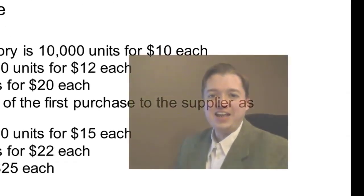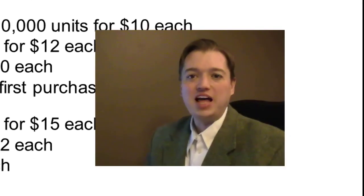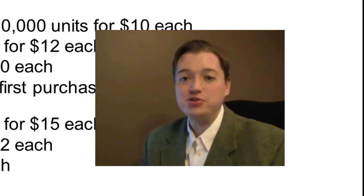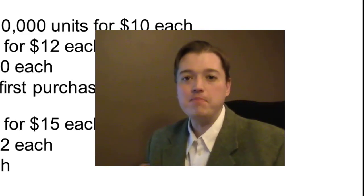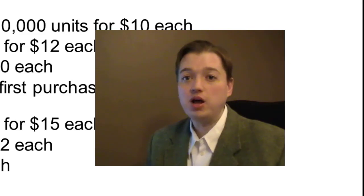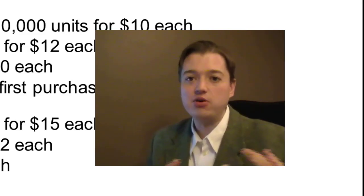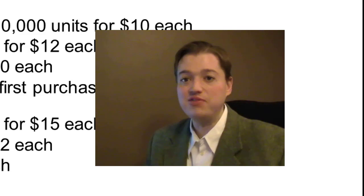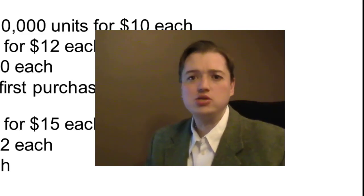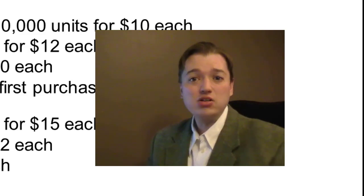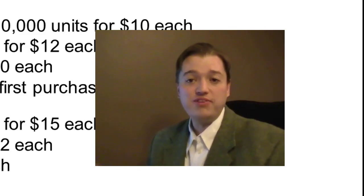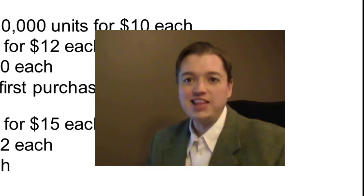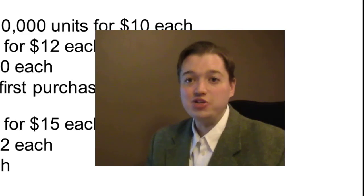Welcome back to our intermediate financial accounting class. Over the last few segments we've been talking about inventory — why it's important, how it gets tracked, the methods available for periodic and perpetual, and LIFO, FIFO, and weighted average. We've done a few calculations with cost of goods sold and talked about how errors in inventory will affect net income. But now it's finally time to start making some calculations.